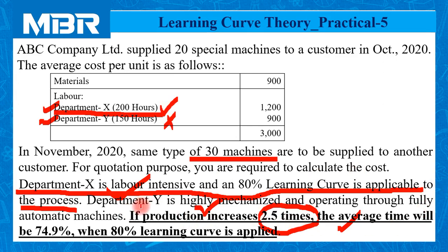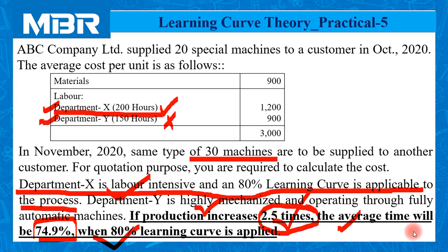The second important point: it is mentioned that if production increases 2.5 times, the average time will be 74.9% when the 80% learning curve is applied. In this question, information is given with a different variety. Earlier, we followed the traditional system of doubling the production — 1, 2, 4, 8, 16 — or batch-wise. But here, the story is connected with a production increase of 2.5 times.